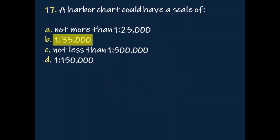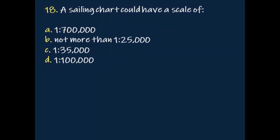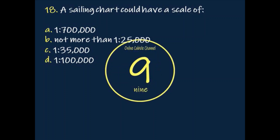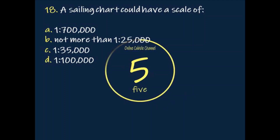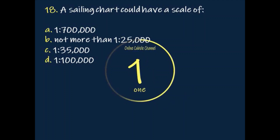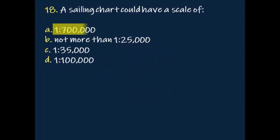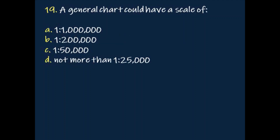Question: A harbor chart could have a scale of? Answer: One is to 35,000. Question: A sailing chart could have a scale of? Answer: One is to 700,000.